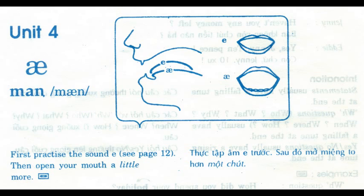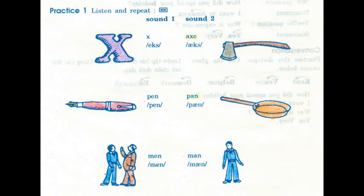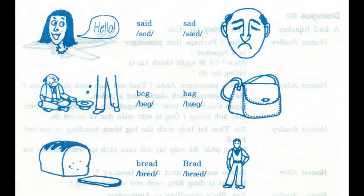Man. First practice the sound e, then open your mouth a little more. Practice 1. Listen and repeat. Sound 1: pen, men, said, beg, bread.